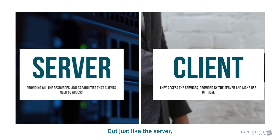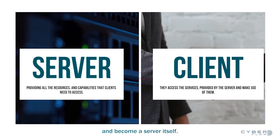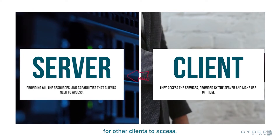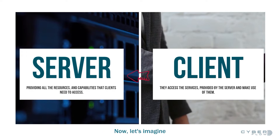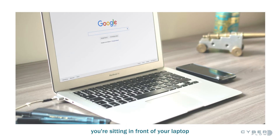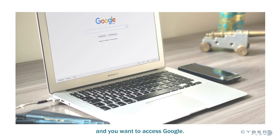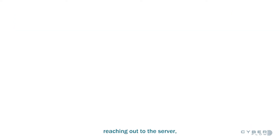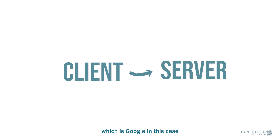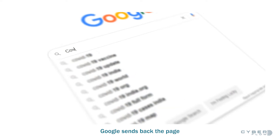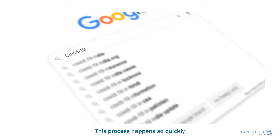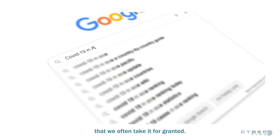But just like the server, a client can also switch roles and become a server itself — it can share resources or host services for other clients to access. Now, imagine you're sitting in front of your laptop and you want to access Google. You type in the web address and hit enter. That's the client reaching out to the server, which is Google in this case, to get the web page. Google sends back the page and displays it on your screen. This process happens so quickly and seamlessly that we often take it for granted.